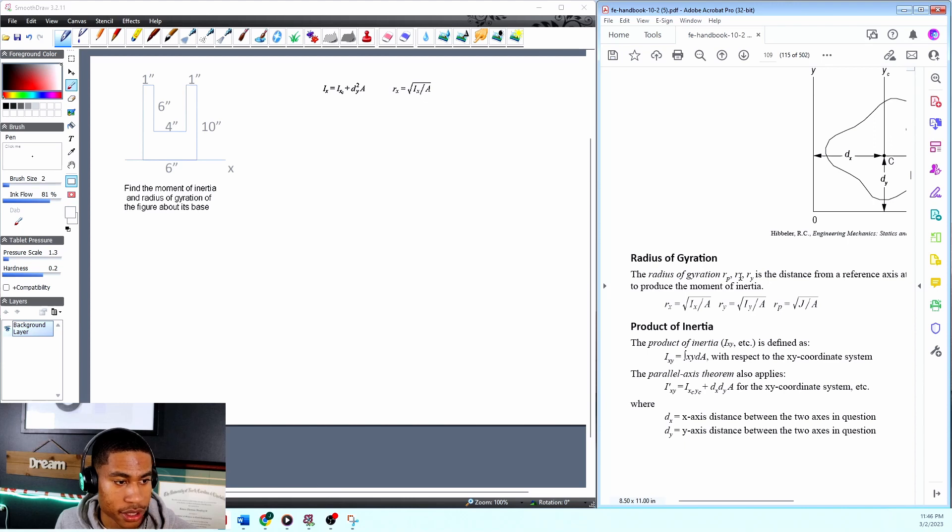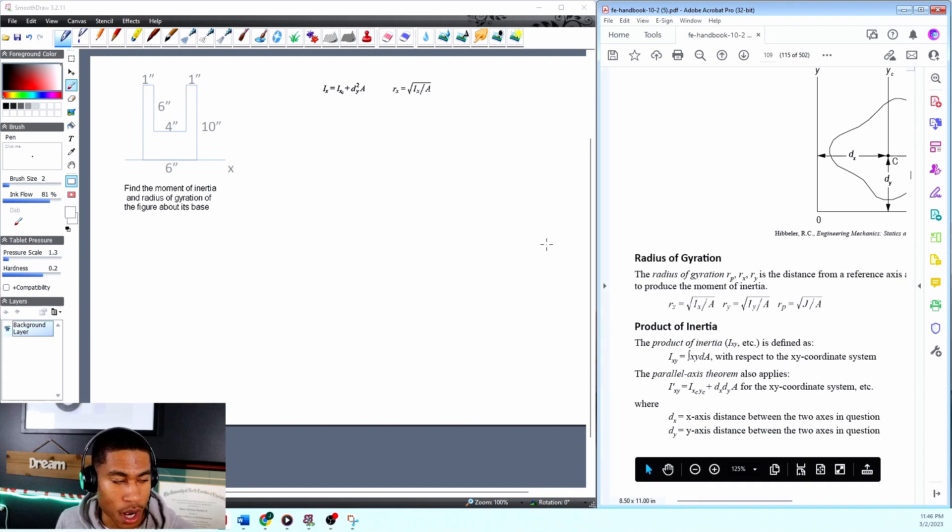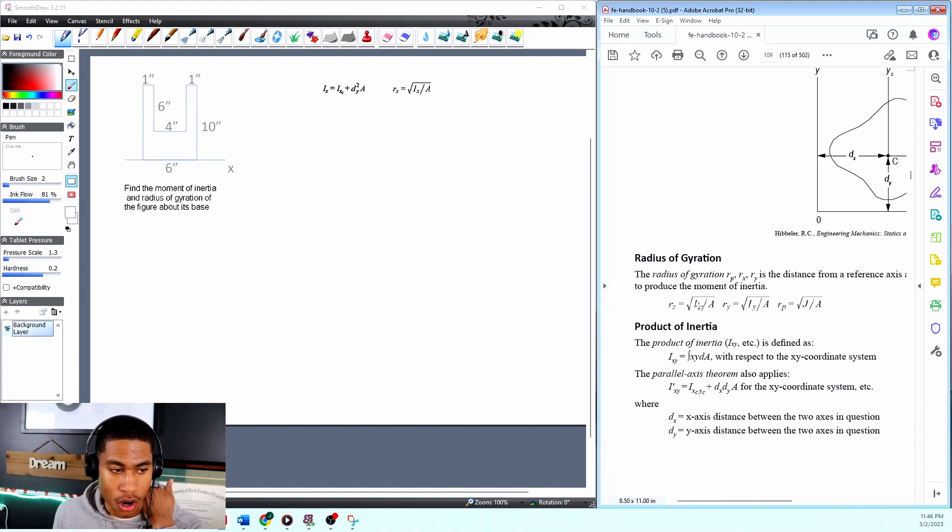I saw the symbols: rp is rx or ry. rp is the polar, y is if we're taking the moment of inertia about the y-axis, but this is asking about its base, so we know we're using the x-axis. I'm going to use rx. Let's go ahead and start solving.